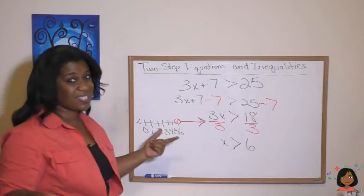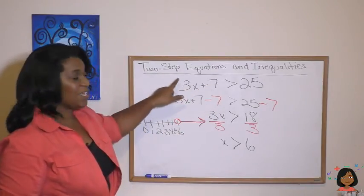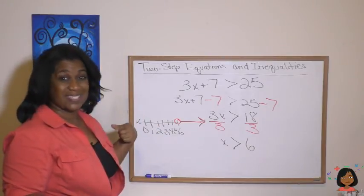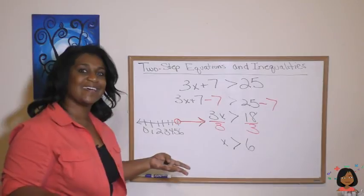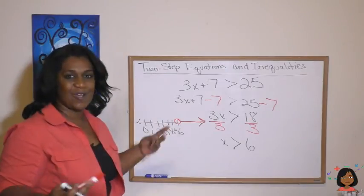So let's just try a number. Let's try 7. Well, 7 times 3 is 21 plus 7 is 28. Is 28 greater than 25? Yes it is. So anything greater than 6 will work.